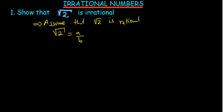At this point I'm going to square both sides to remove the square root. That gives us 2 being equal to A squared divided by B squared. Cross multiplying gives us A squared being equal to 2B squared.